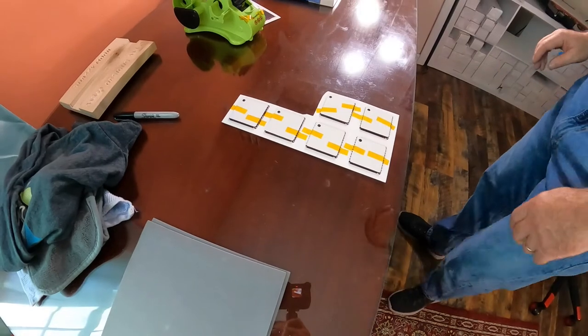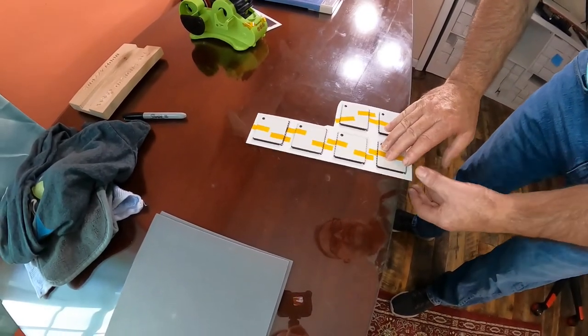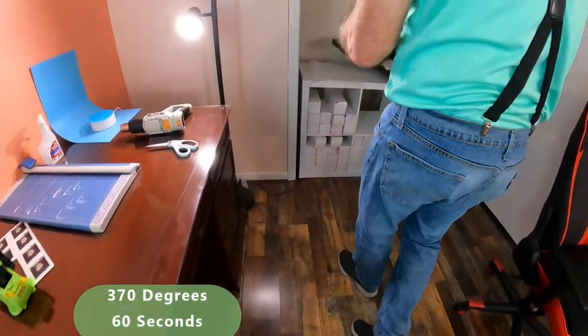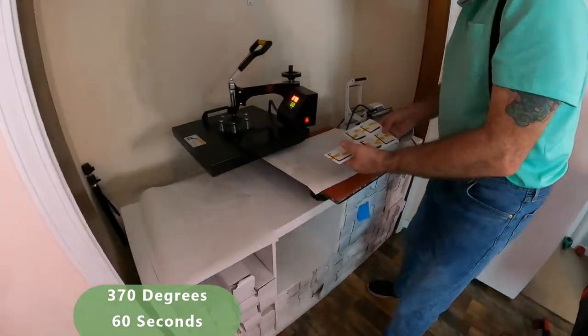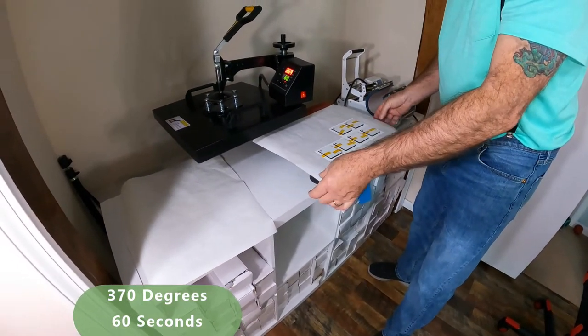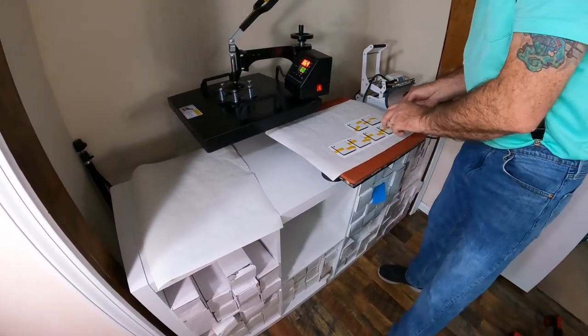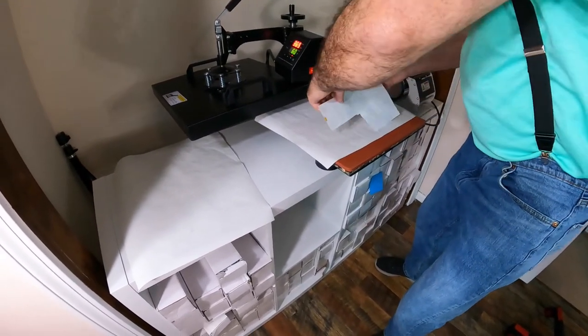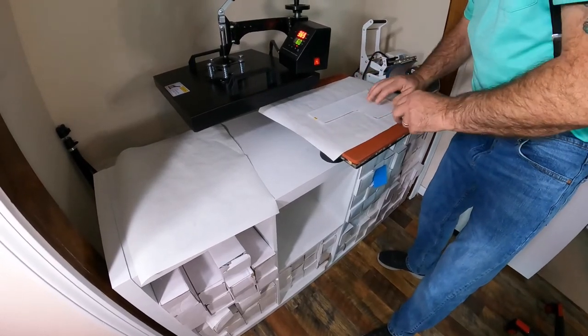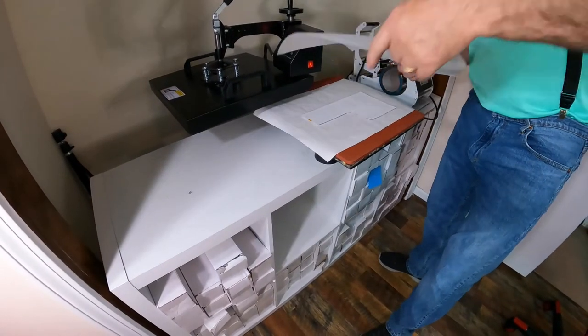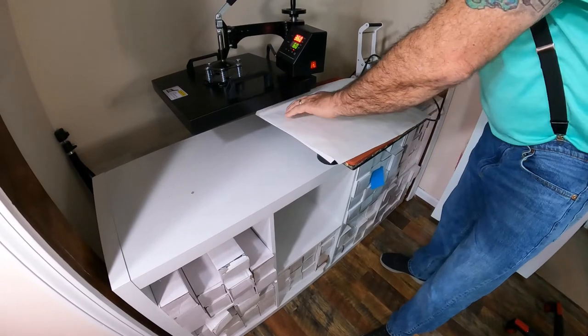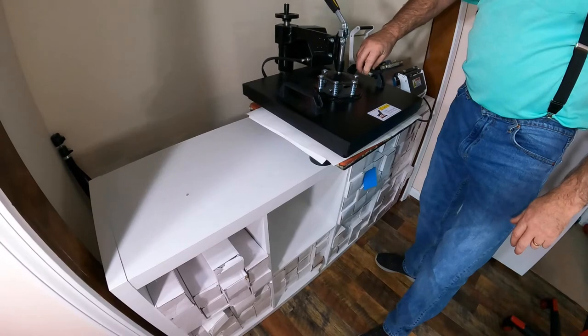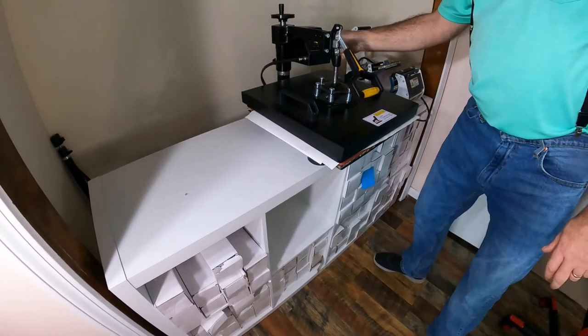I've got my press set for 370 degrees for 60 seconds. Make sure you have your parchment paper on the bottom. When you press these, the paper goes on the top. So you gently flip them over, just like that. Put another sheet of paper on top, and I'm going to press around and start it off.